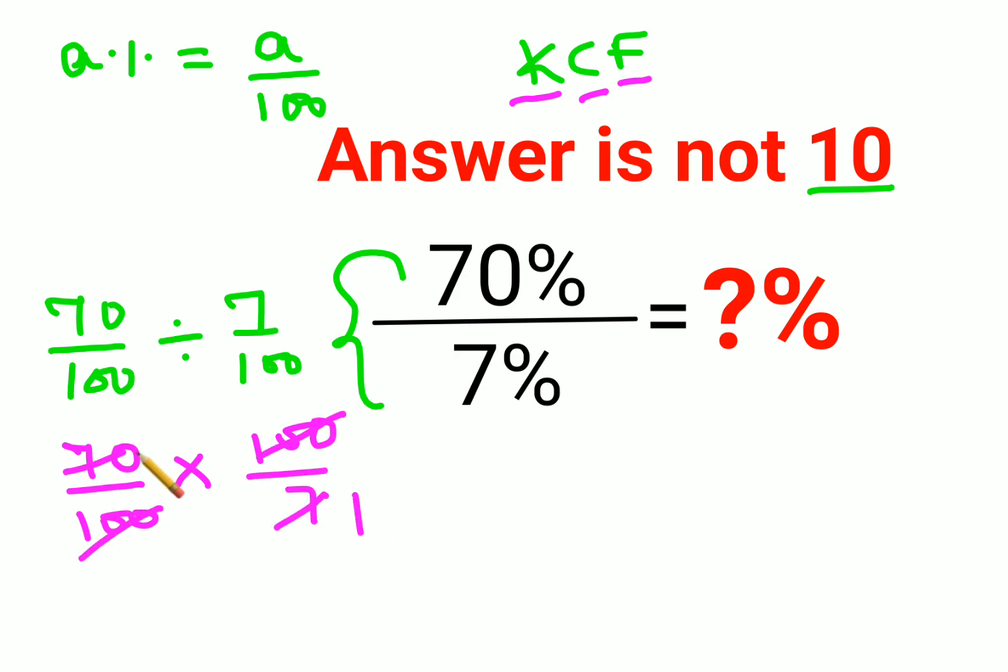Now this and this gets cancelled. This is 1 and 10. So yes, the answer comes out to be 10.